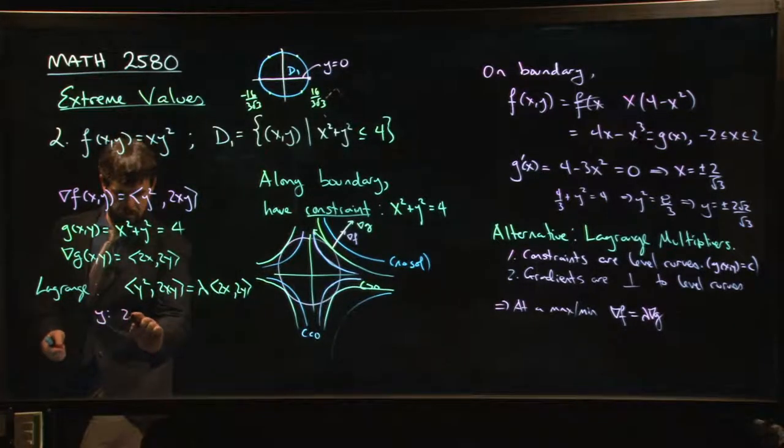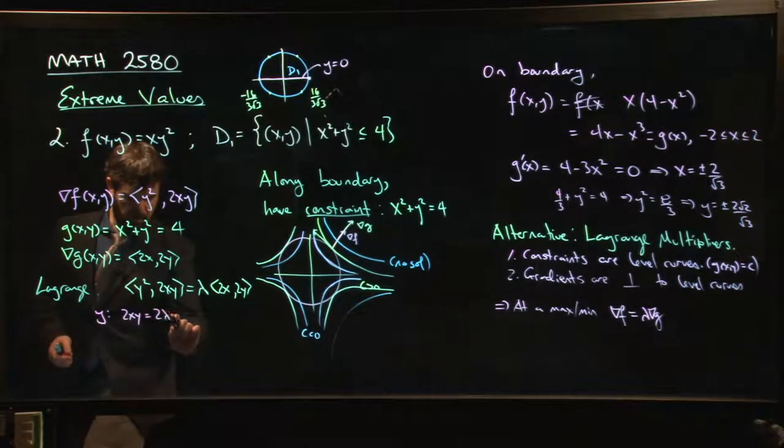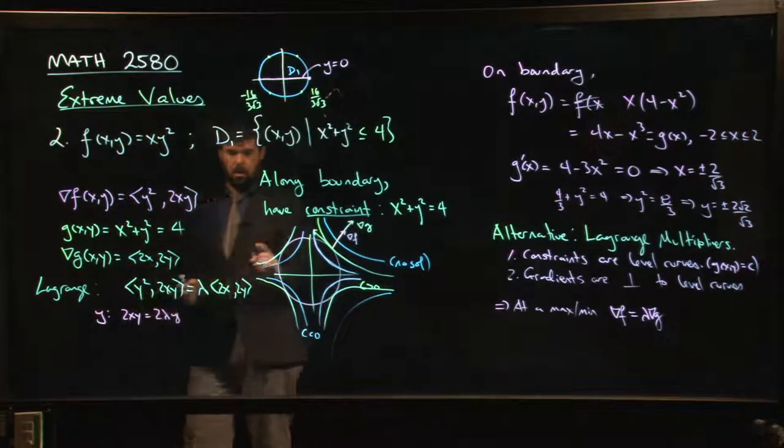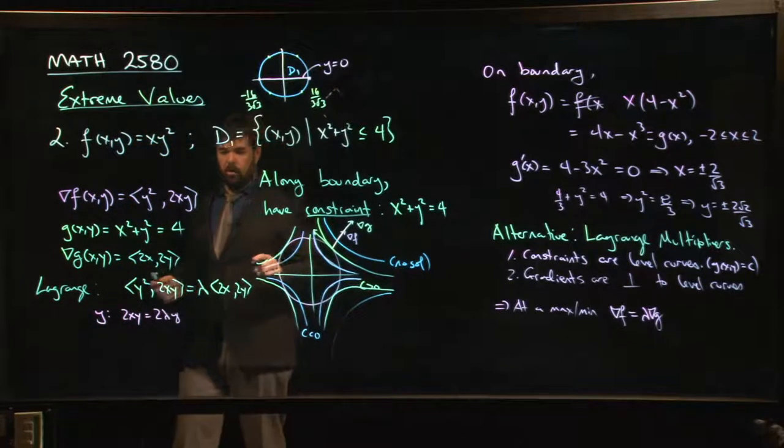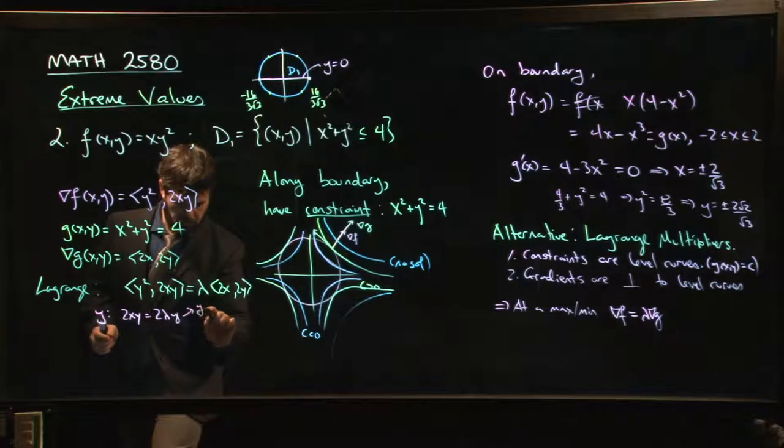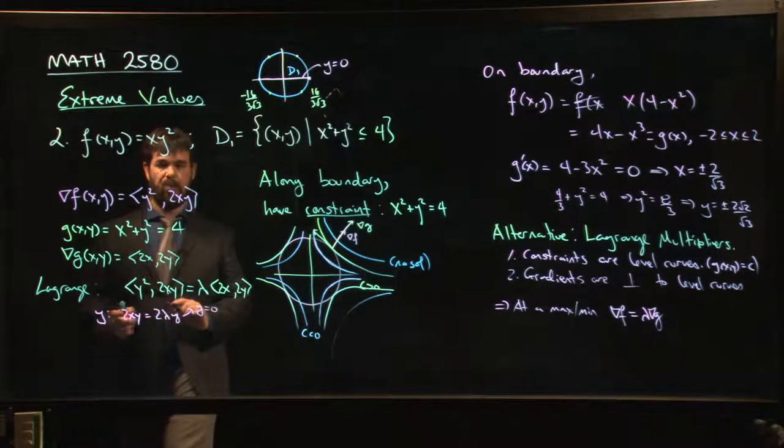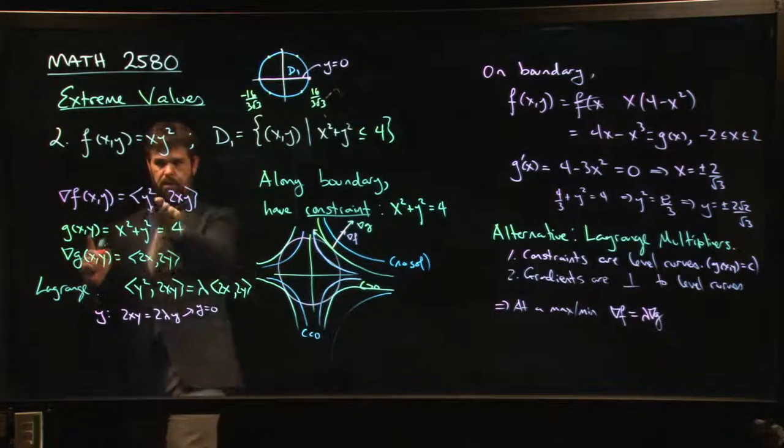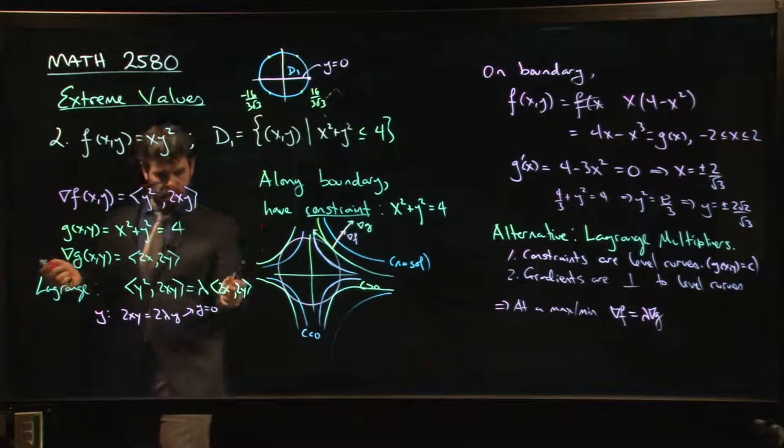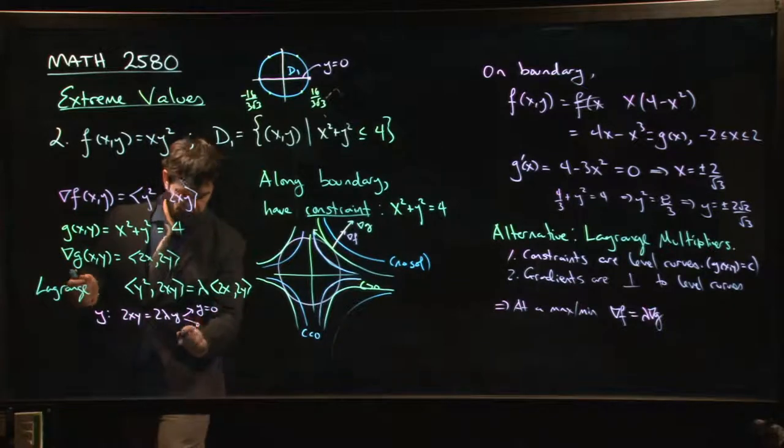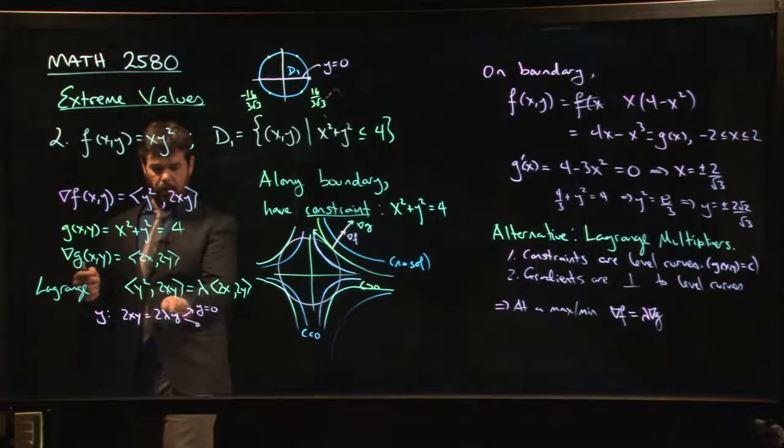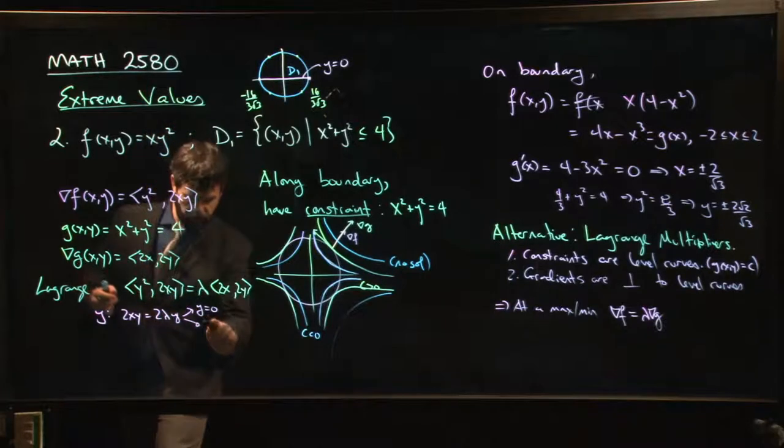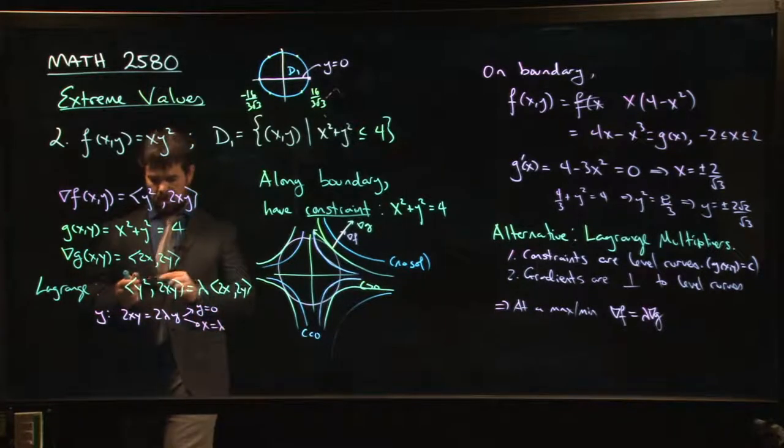If you compare the y components, you have 2xy equals 2 lambda y. Well, there's two ways to solve that equation. We could have y equals 0, and we know what happens when y equals 0. That's our critical point, remember. Then the gradient of f is identically 0. Or, if y is not equal to 0, I can divide both sides by y. I can divide both sides by 2. And I get x equals lambda. So what I'm going to do is, I'm going to take this, and I'm going to sub it in.